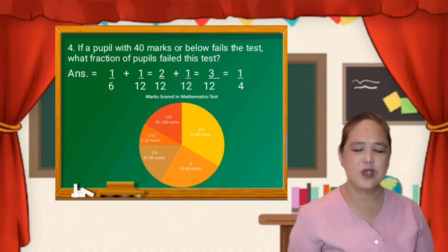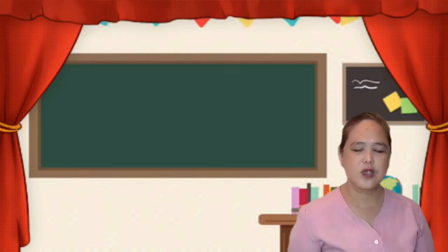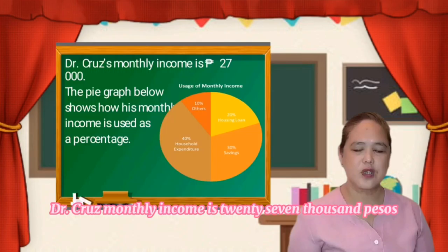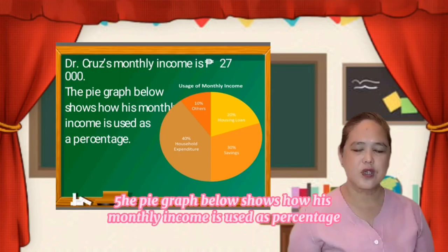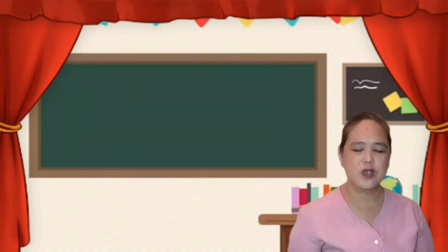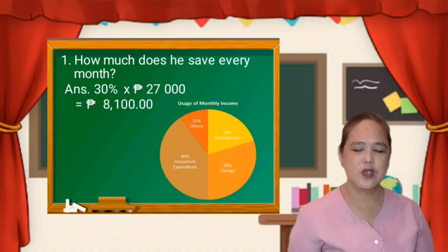Let us have another example. Dr. Cruz's monthly income is 27,000 pesos. The pie graph below shows how this monthly income is used as a percentage. So let us answer number 1: how much does he save every month? For savings, we have 30%. So you are going to multiply it by 27,000 pesos because that is the monthly income. Change 30% to decimal and multiply it by 27,000. The saving every month is 8,100 pesos.